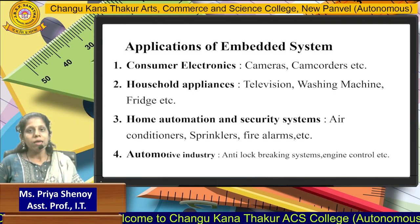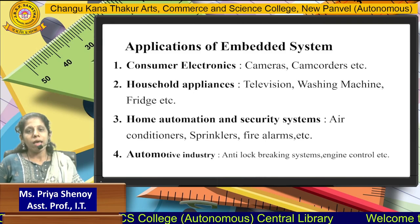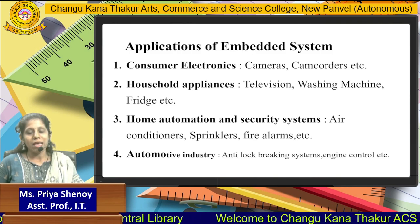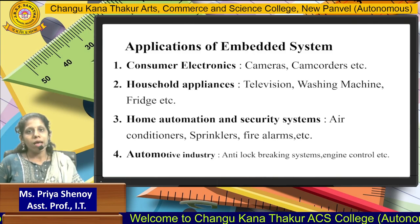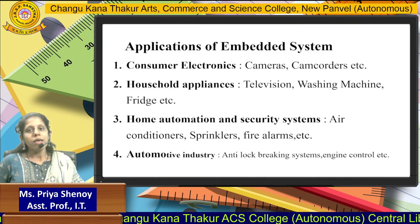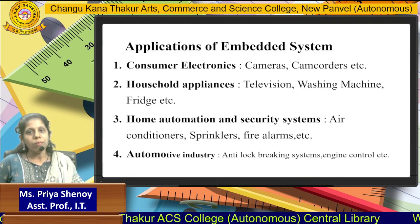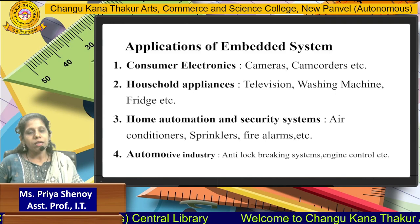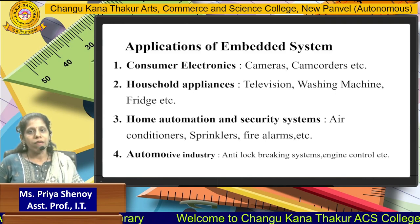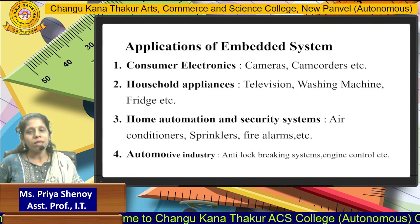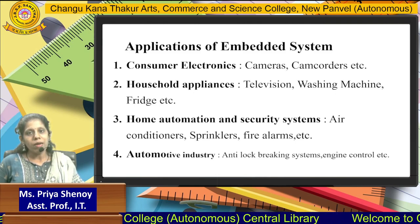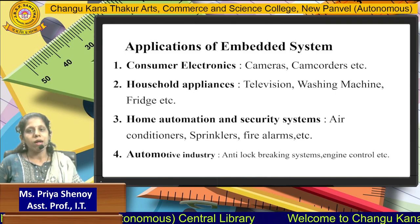Even in the automotive industry, which includes modern cars or trucks, embedded system is being used on a very large scale. If we consider anti-lock braking systems and engine control, embedded system is used. Many embedded systems can be combined together in a single device. In a modern car, one embedded system may be used for anti-lock braking, another may be used to control and monitor the display, and so on.